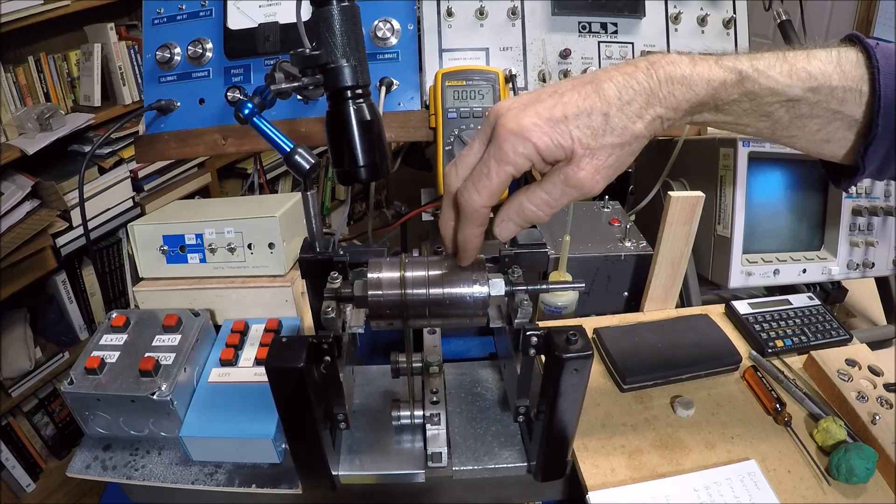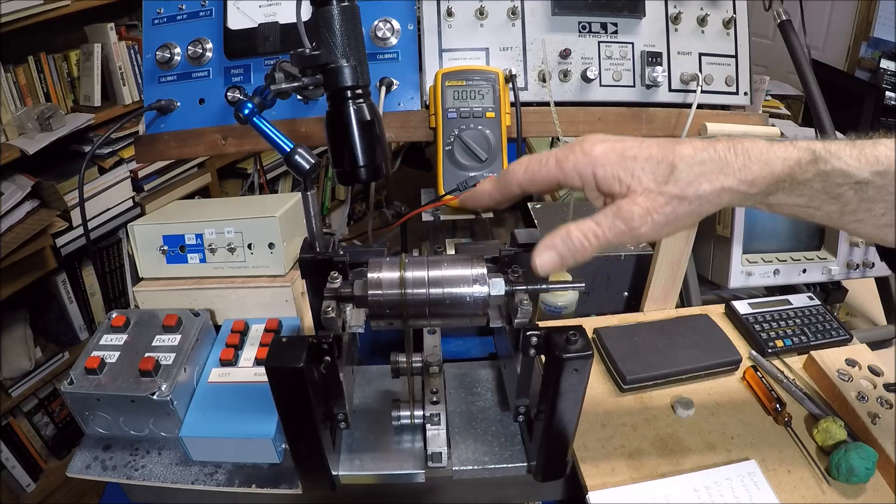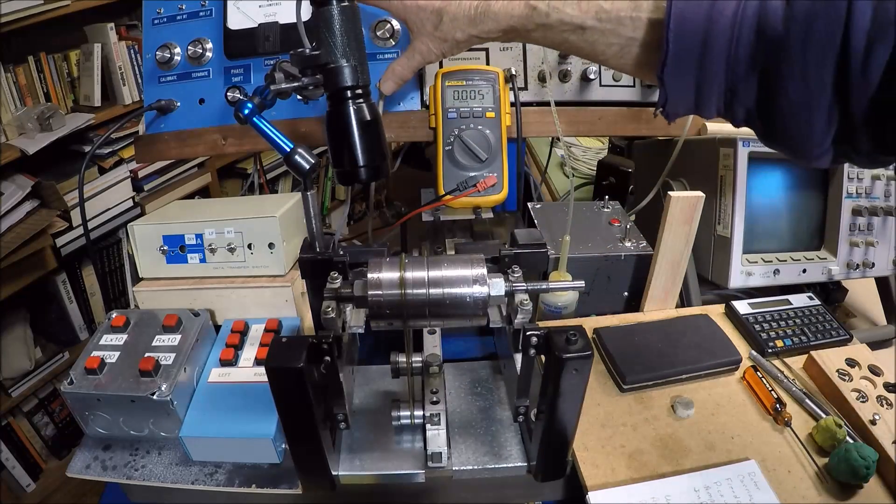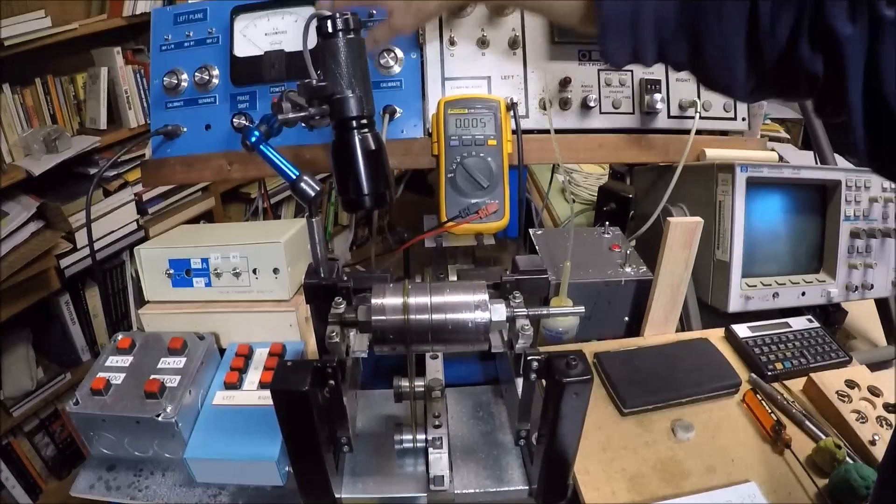And mounted on the carriage itself are little rods that have neodymium boron magnets. And so I get a nice signal out of these. The signal is taken up to the amplifier.